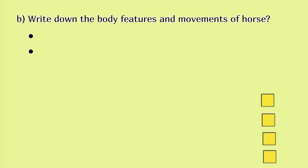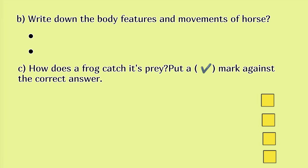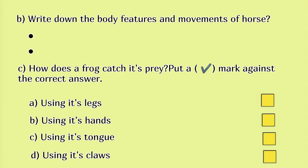B. Write down the body features and movements of horse. C. How does a frog catch its prey? Put a tick mark against the correct answer: using its legs, using its hands, using its tongue, using its claws.